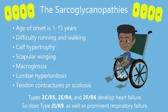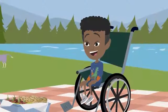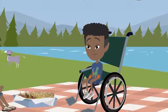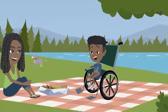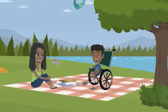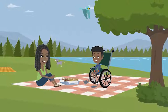Type 2I-R9 also develops heart failure, as well as prominent respiratory failure. There is still a long way to go with precisely characterizing LGMD and its many subtypes, but the correlation of specific genetic mutations with the growing understanding of LGMD phenotypes has striking benefits.